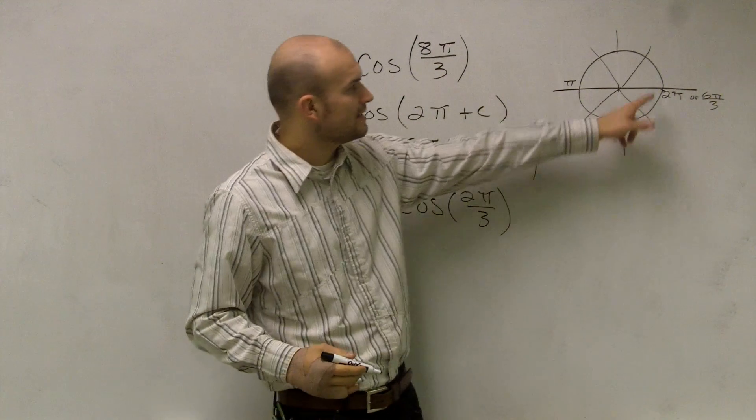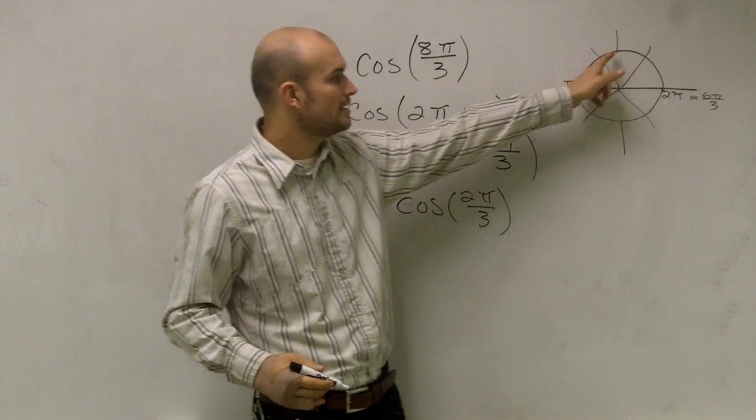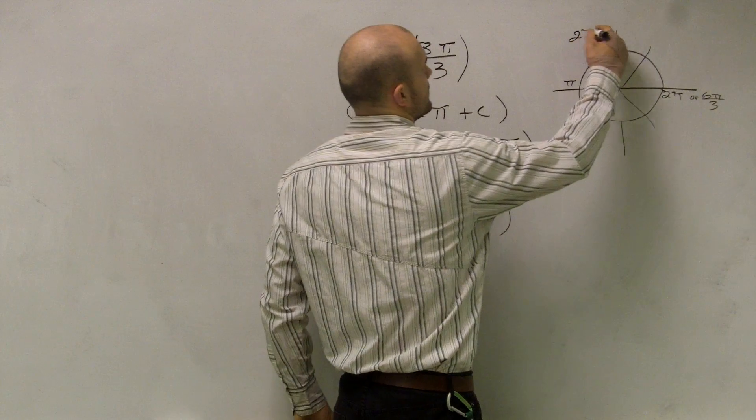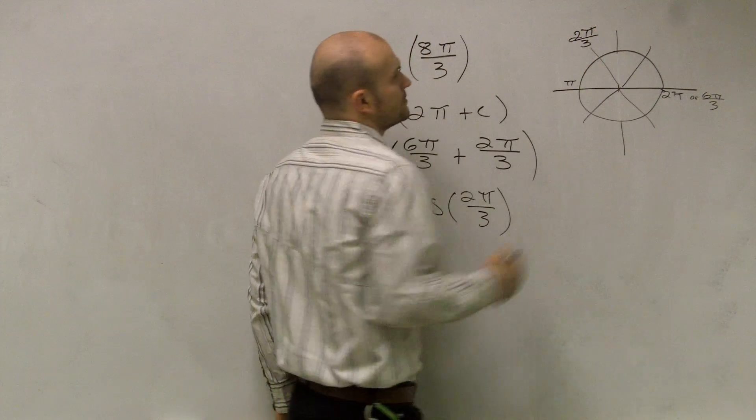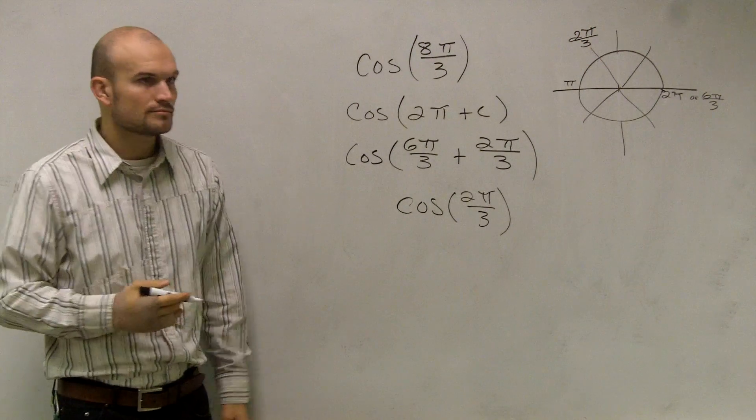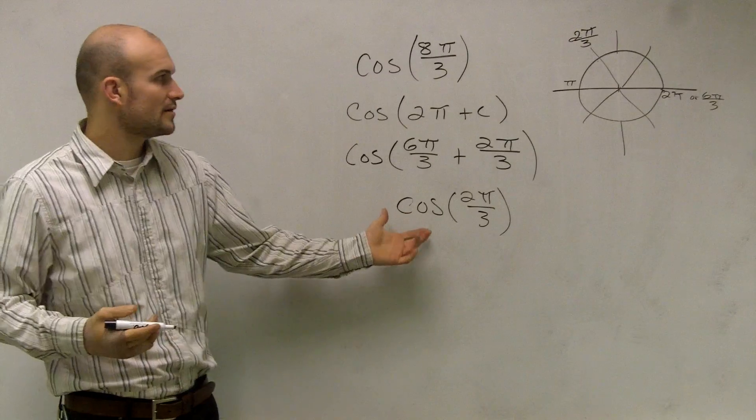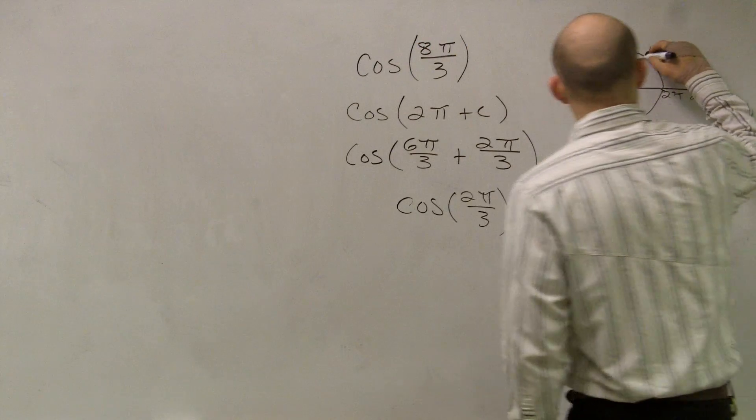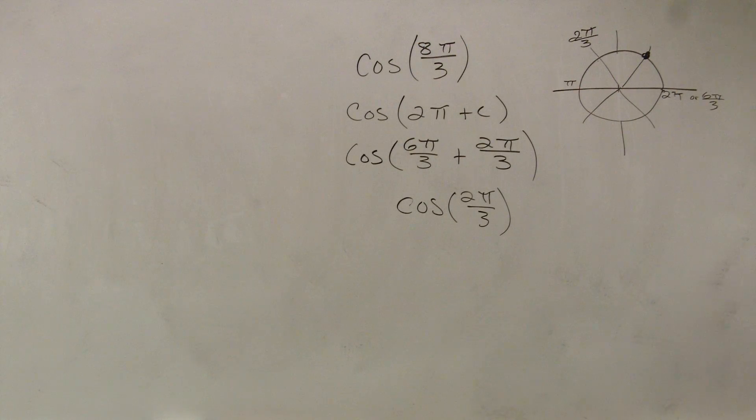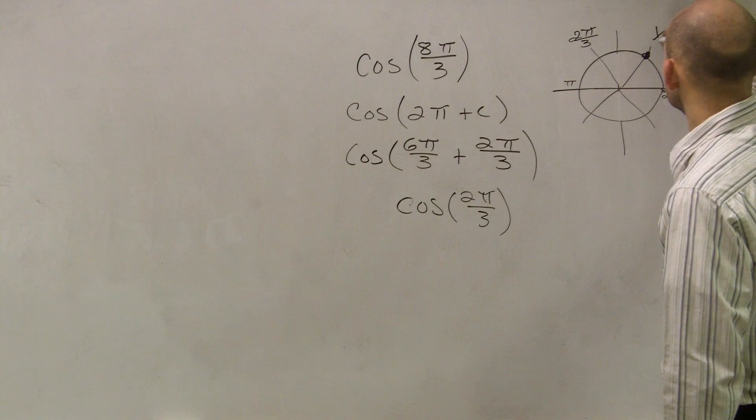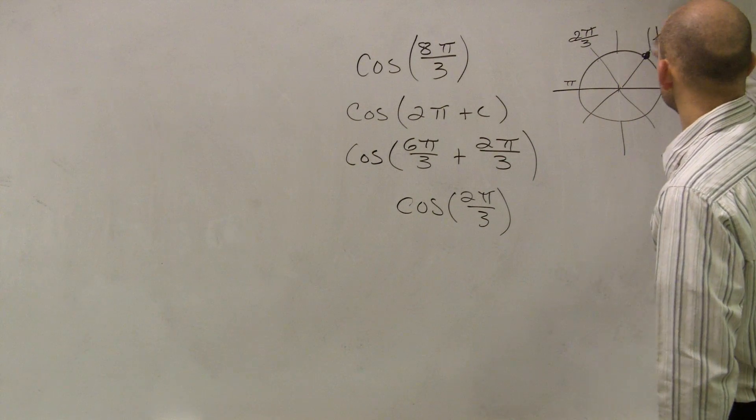So 2π is going to be π. This is π/3. This would be 2π over 3. Well, I think it says to evaluate for cosine, right? So if we know the point here, which is π over 3, this is going to be 1/2, square root of 3 over 2.